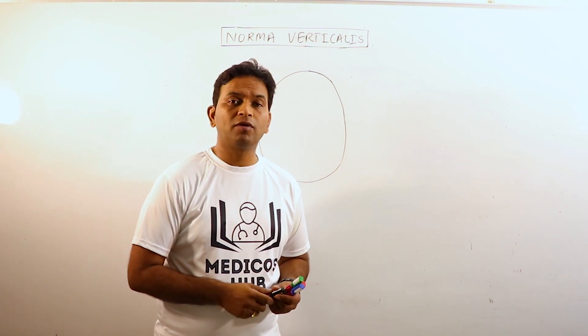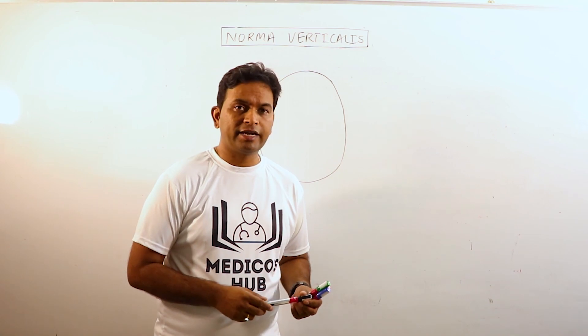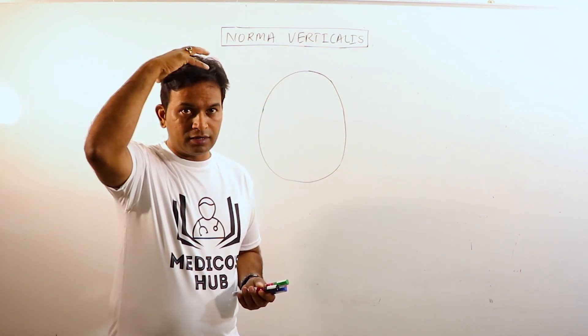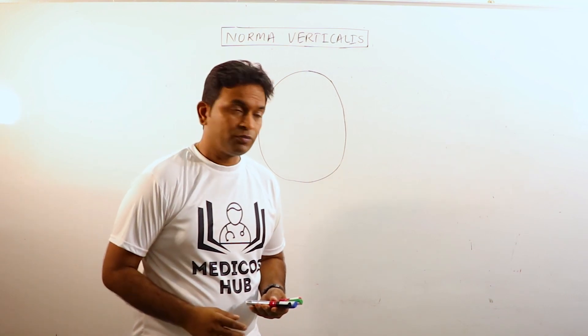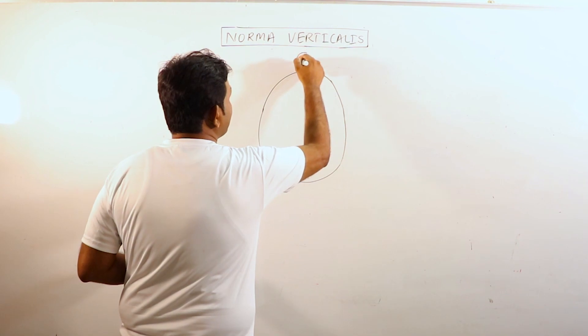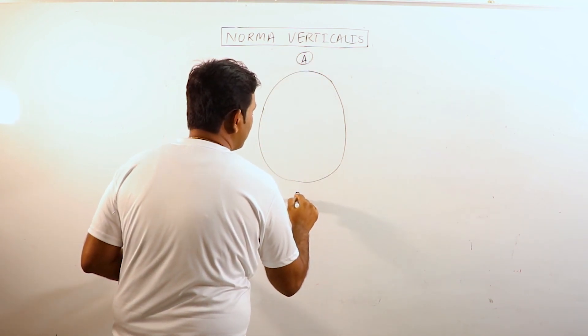Today we are going to discuss the Norma Verticalis. What is Norma Verticalis? Norma Verticalis is the view of the skull when you observe it from above. It appears to be oval in shape which is narrow anteriorly and broad posteriorly.